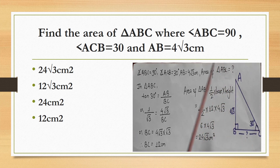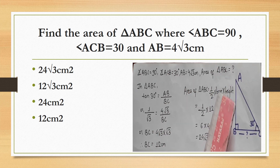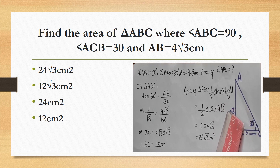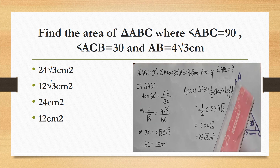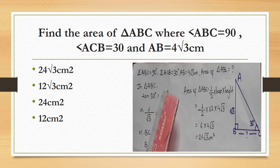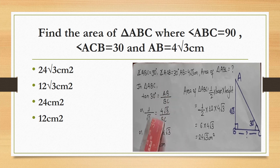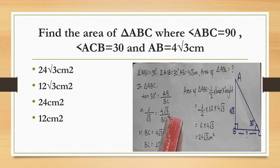To find the area of the triangle, use (1/2) × base × height. The height is AB = 4√3. We need to find the base BC. Using tan30 = AB/BC, that is 1/√3 = 4√3/BC. Solving gives BC = 12 cm. So the base is 12 cm.